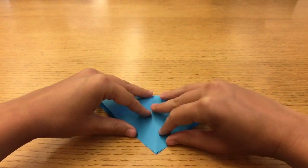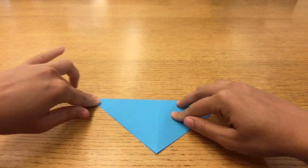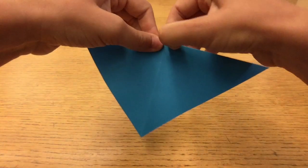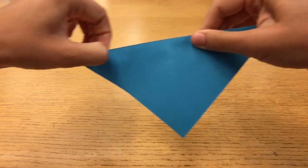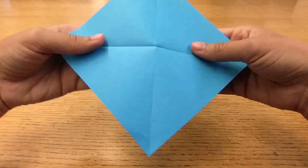These creased folds will be our guidelines. See how they cross perpendicular to each other, showing you the exact center of the square? And they divide the square into four smaller triangles.